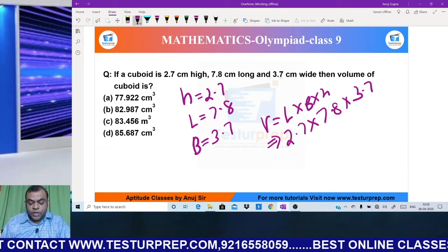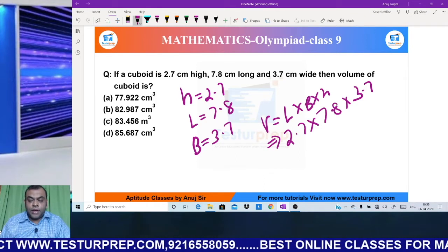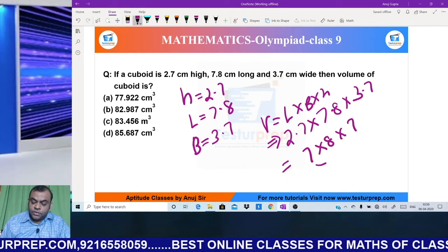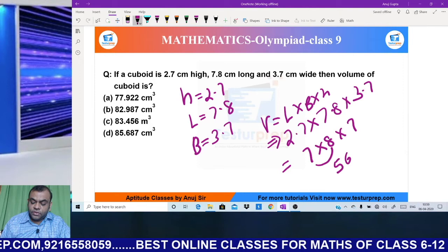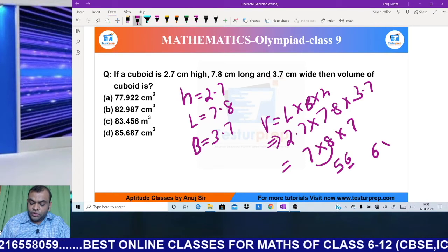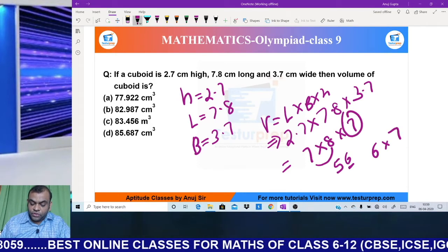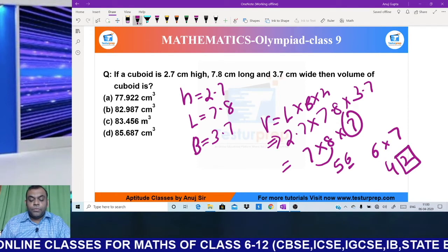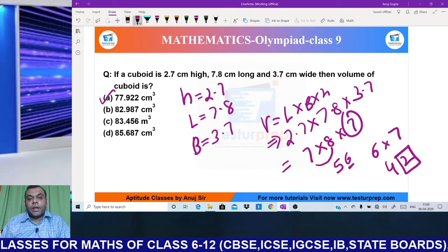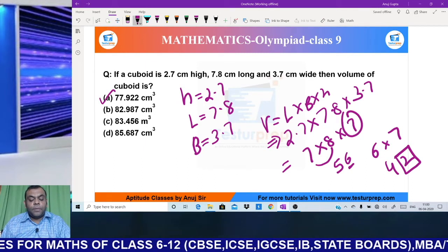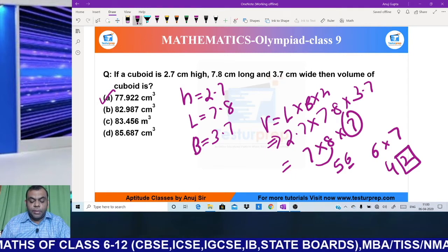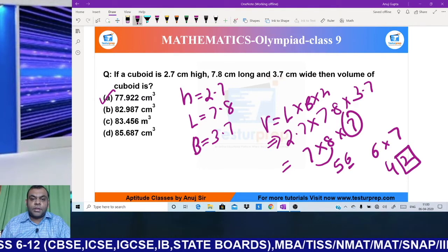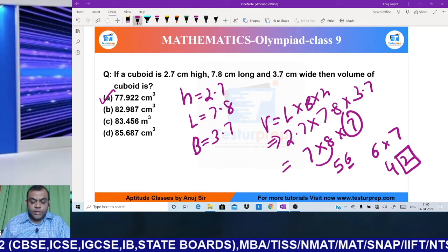Many students will be confused - how to do such long calculations. For calculation, simply multiply the unit digits: 7 × 8 = 56, write 6. Then 6 × 7 = 42. So ultimate unit digit is 2. I have an option ending in 2. Hence my answer becomes 77.922 cm³. I hope everyone understands how we can avoid calculations. Once clear, move on to the next question.